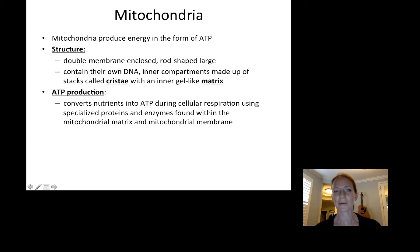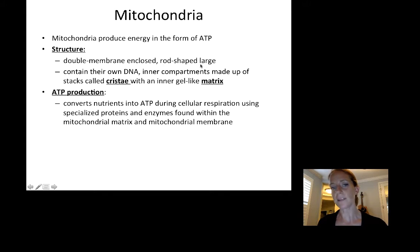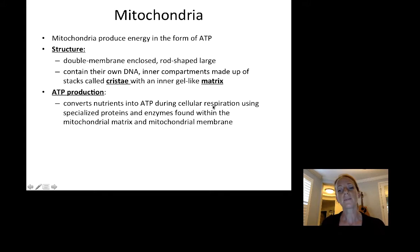The next organelle is mitochondria. They produce energy in the form of ATP, so they are often called the powerhouse of the cell. They are double membrane-enclosed, rod-shaped, and very large. They contain their own DNA and have inner compartments made up of stacks called cristae with an inner gel-like matrix. They convert nutrients into ATP through a process called cellular respiration, which uses specialized proteins and enzymes found within the mitochondria — in the matrix and in the membrane — to make ATP.